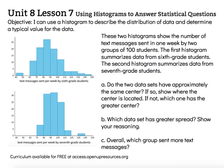There's about the same amount of data on the left as there is on the right. I've marked it for the 6th graders and for the 7th graders, and you can see those are pretty much in the same spot. So neither one of them has a greater center — their centers are about the same, both somewhere in between 95 and 100 text messages sent per student in general.